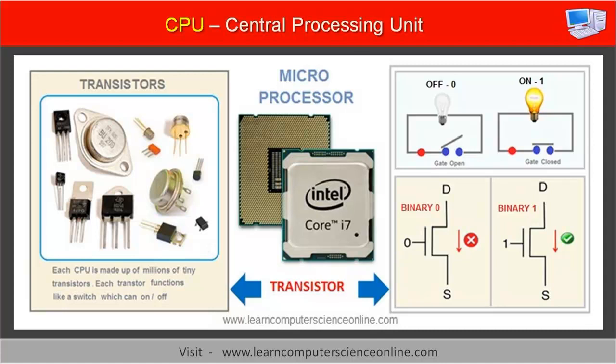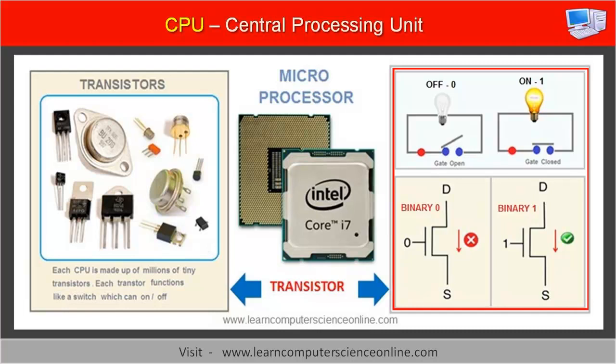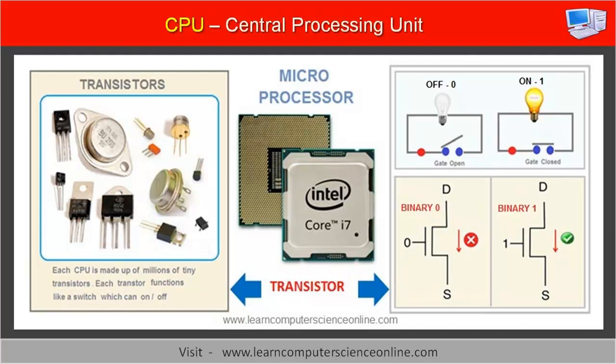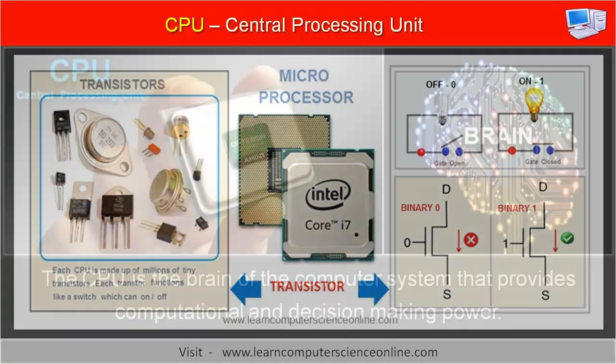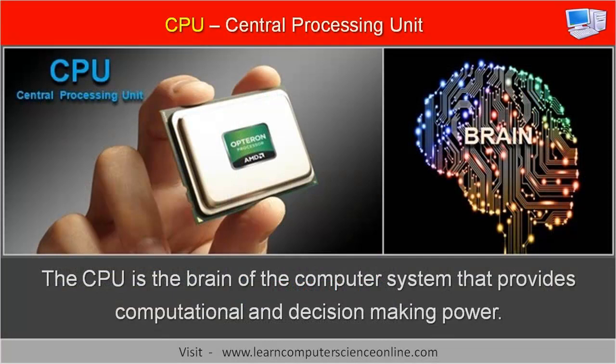The transistor is a basic building block and functions as a micro switch that can be programmed to represent two states — either on or off. For this reason, the CPU understands only binary code consisting of 1 and 0, which represents on and off. The processor controls all the activities of the computer system, and therefore it is referred to as the brain of the computer system.